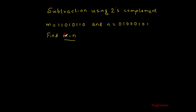So what is the method? First I will keep m as it is, then I represent minus n using two's complement method, then I would add it with m so that I would get the final answer.